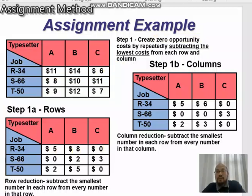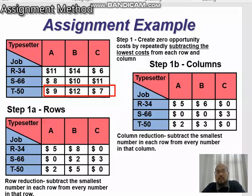For the second row, between 8, 10, and 11, the minimum number is 8. So: 8 minus 8 equals 0, 10 minus 8 equals 2, and 11 minus 8 equals 3. For the third row, 7 is the minimum number. So: 9 minus 7 equals 2, 12 minus 7 equals 5, and 7 minus 7 equals 0. We have now completed the row reduction.